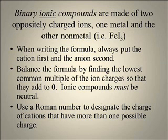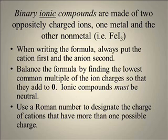The next kind of compound is called a binary ionic compound. These are made from two oppositely charged ions, the first almost always being a metal, the second being a nonmetal. For example, if I had a formula of FeI3, I could immediately identify this as ionic because iron is a metal and iodine is a nonmetal. Whenever you're writing a compound, put the cation or metal first, the anion or nonmetal second. Make sure you balance the formula by finding the lowest common multiple of the ion charges so that they add up to zero. Ionic compounds must be neutral.